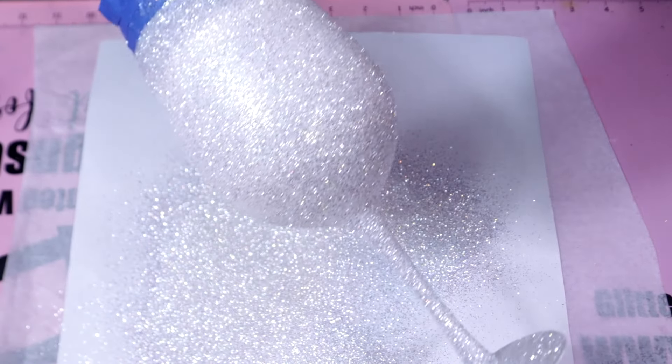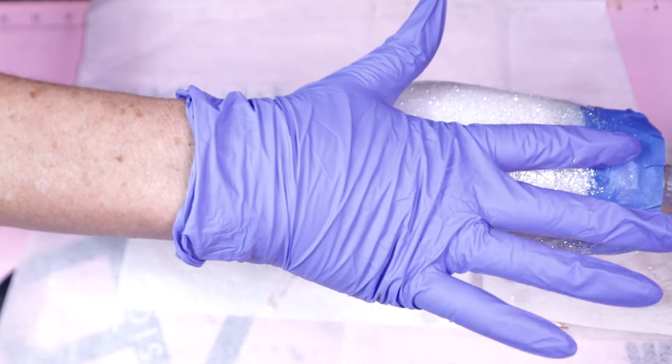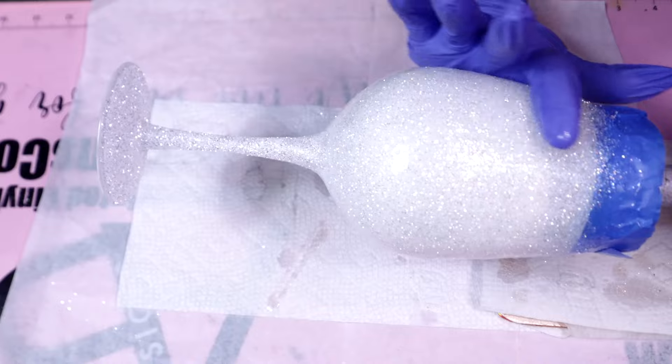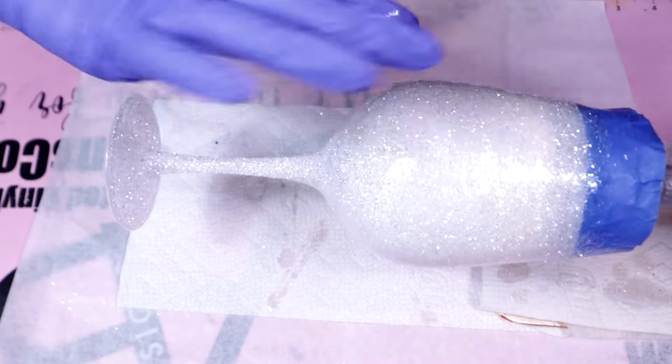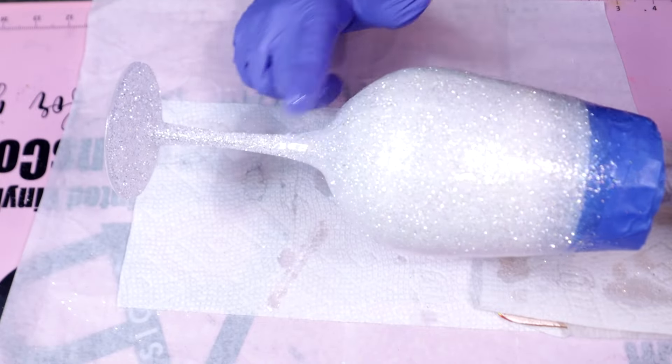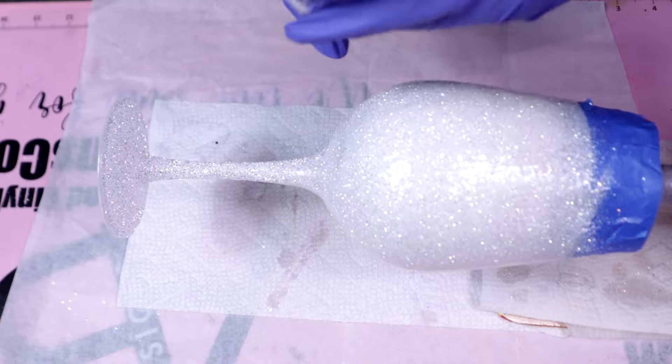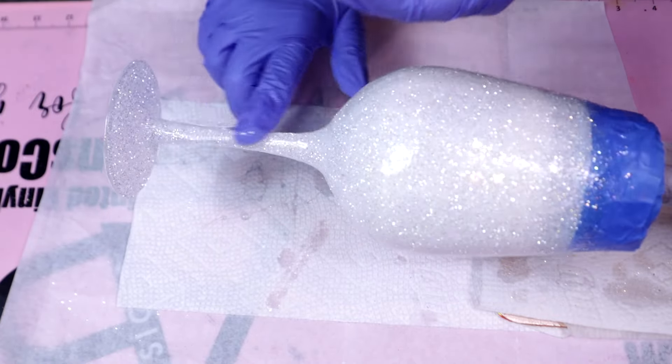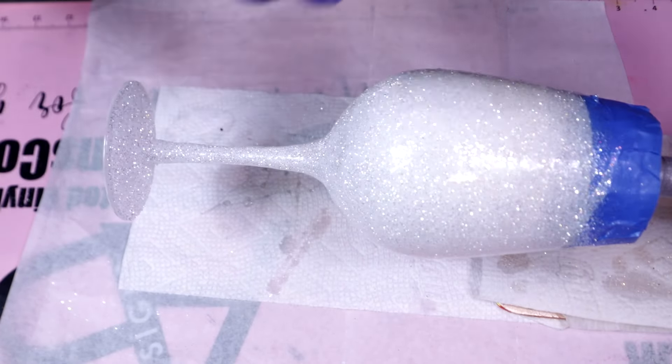Now that we've applied the glitter and we know that she's sealed and dry, we're ready to move on to the first coat of epoxy. Because this is such a shiny, vibrant white, it was imperative for me to use the Artist Resin from CCDIY. I do speed up this clip, but I also wanted you guys to see the whole thing and how I go through the stem as well as the base.